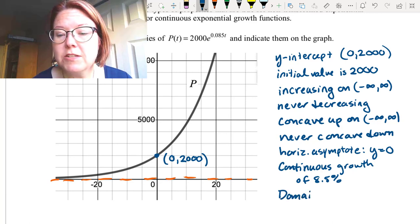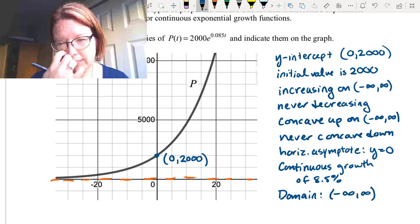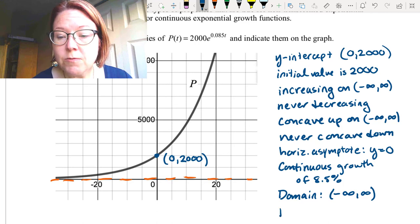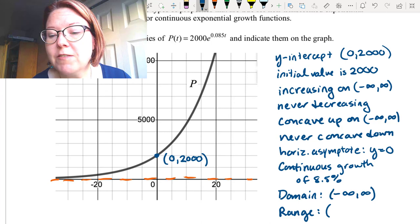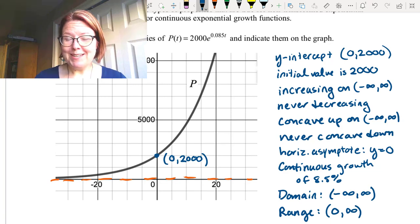The domain of an exponential function is always going to be negative infinity to infinity unless we have some kind of restriction because it's a real-world problem. And the range here is everything above that horizontal asymptote. So that would be left parentheses zero comma infinity right parentheses. That's ten properties about the function.